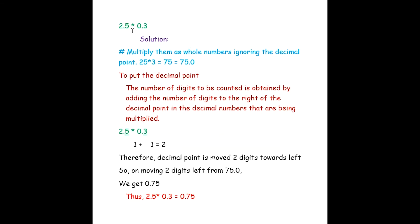The next question is 2.5 into 0.3. Here both numbers are decimals, so we ignore the decimal points and consider them as whole numbers. 2.5 becomes 25 and 0.3 becomes 3. 25 into 3 is 75, which we express as the decimal number 75.0.